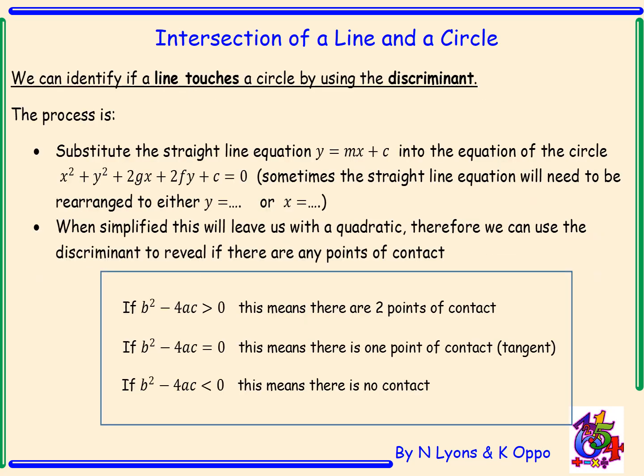We can identify if a line touches a circle by using the discriminant. The process is to substitute the straight line equation into the equation of a circle. Once we've done this it will simplify to leave a quadratic, and from a quadratic we can prove if there are two points, one point, or no points of contact using the discriminant.